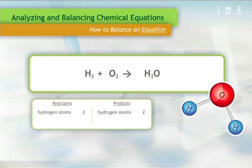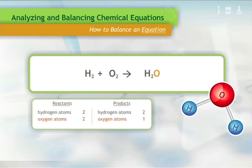Let us balance this equation. We know the hydrogen atoms are balanced, so we will focus first on the unbalanced oxygen atoms. Multiplying the number of oxygen atoms by two on the right side will make them equal to the number of oxygen atoms on the left side. To do this, place a coefficient of two in front of the compound H₂O.